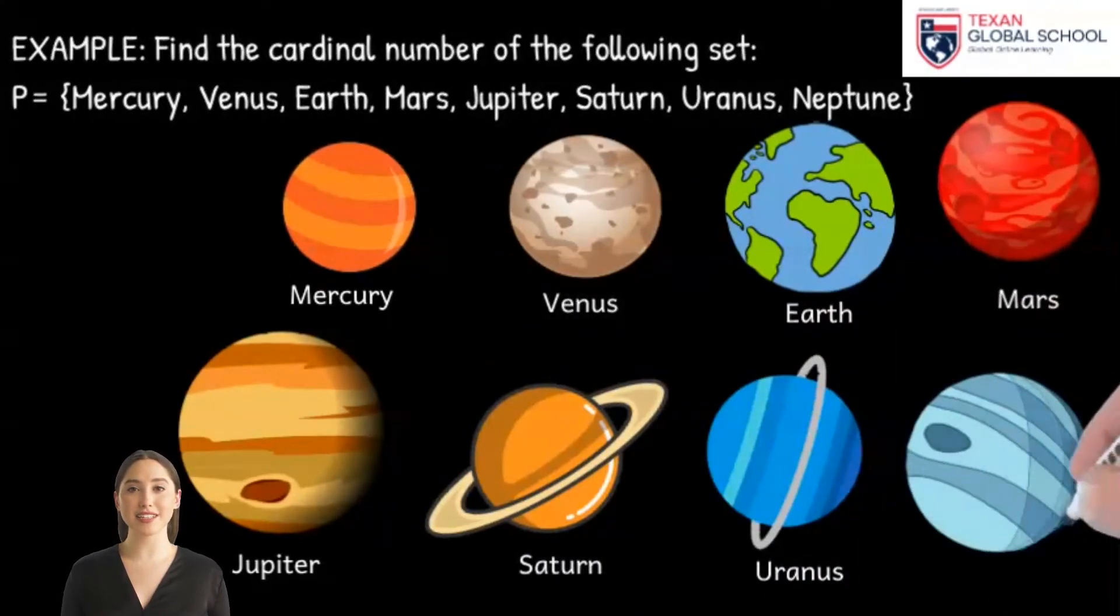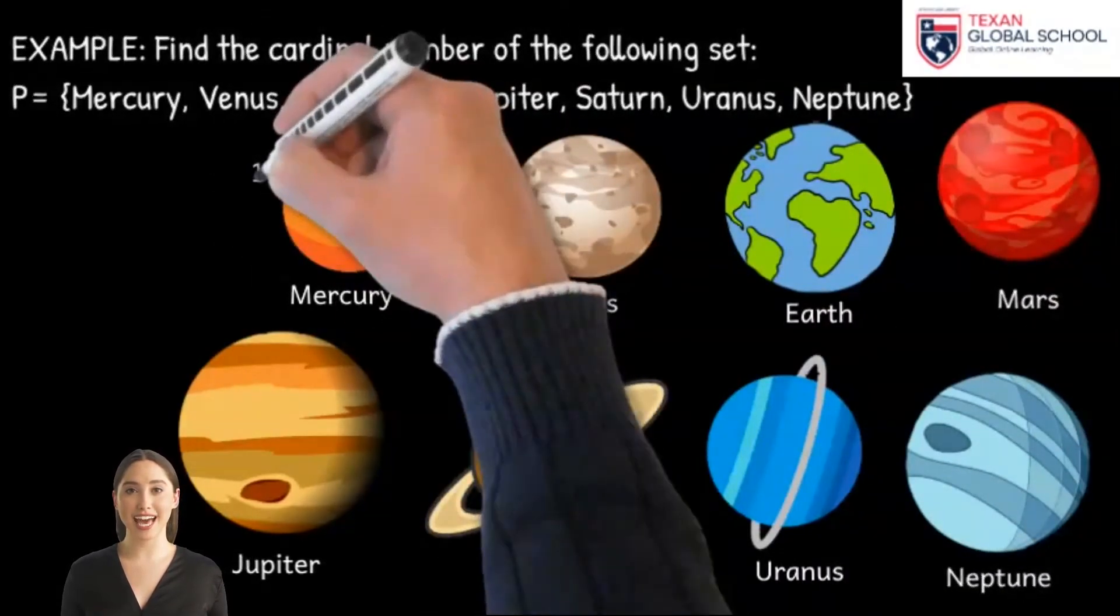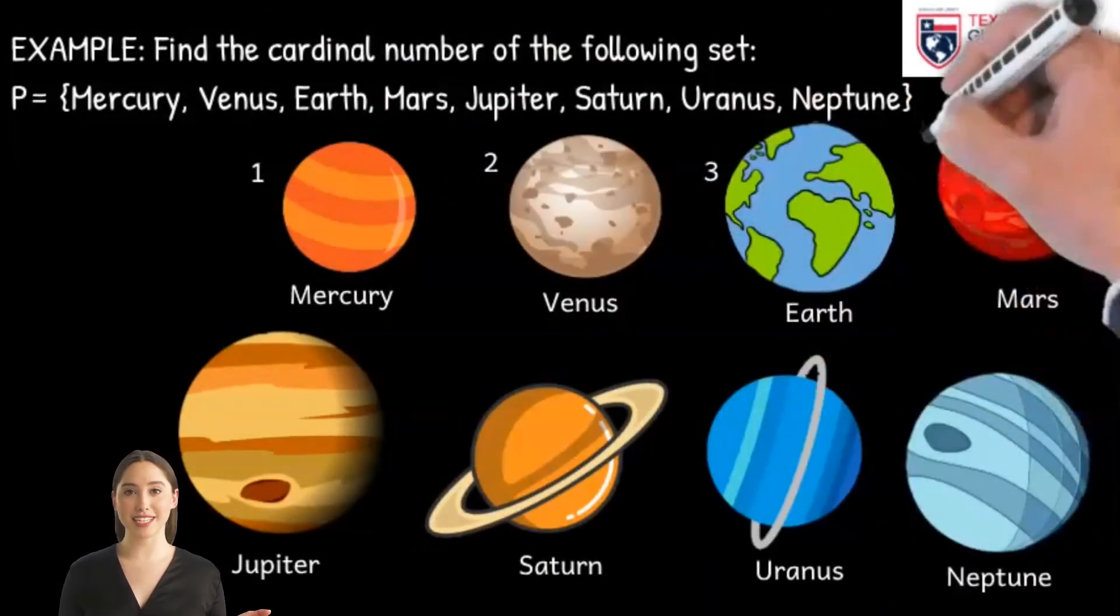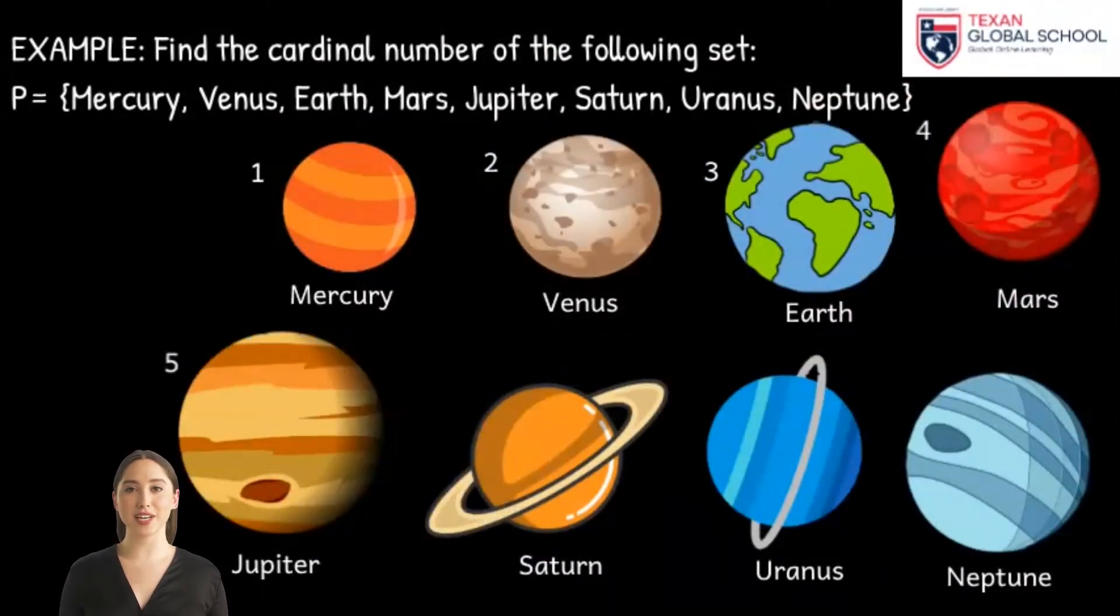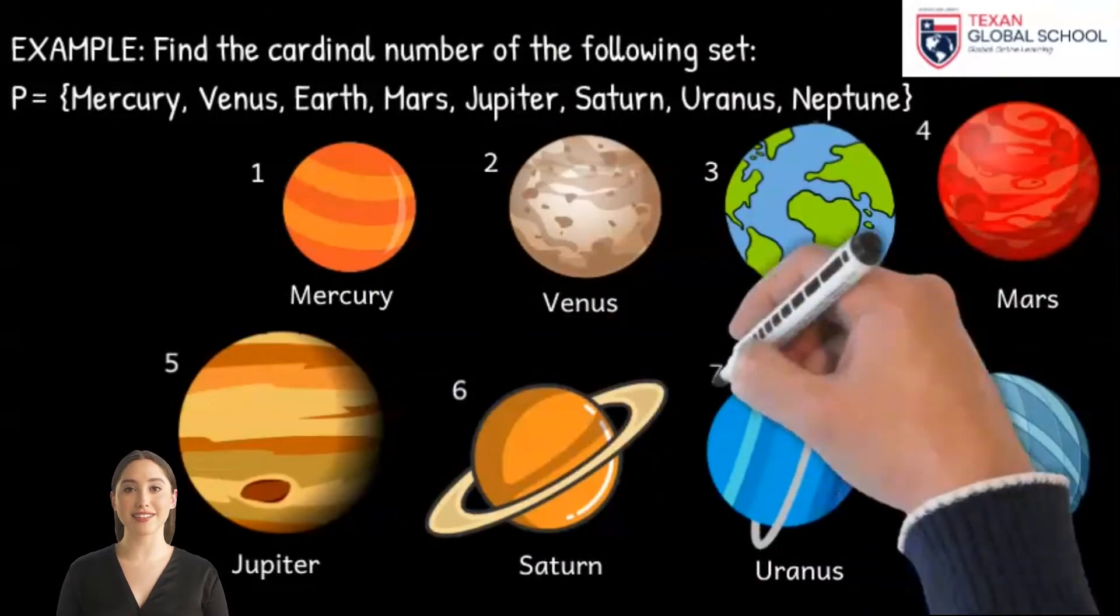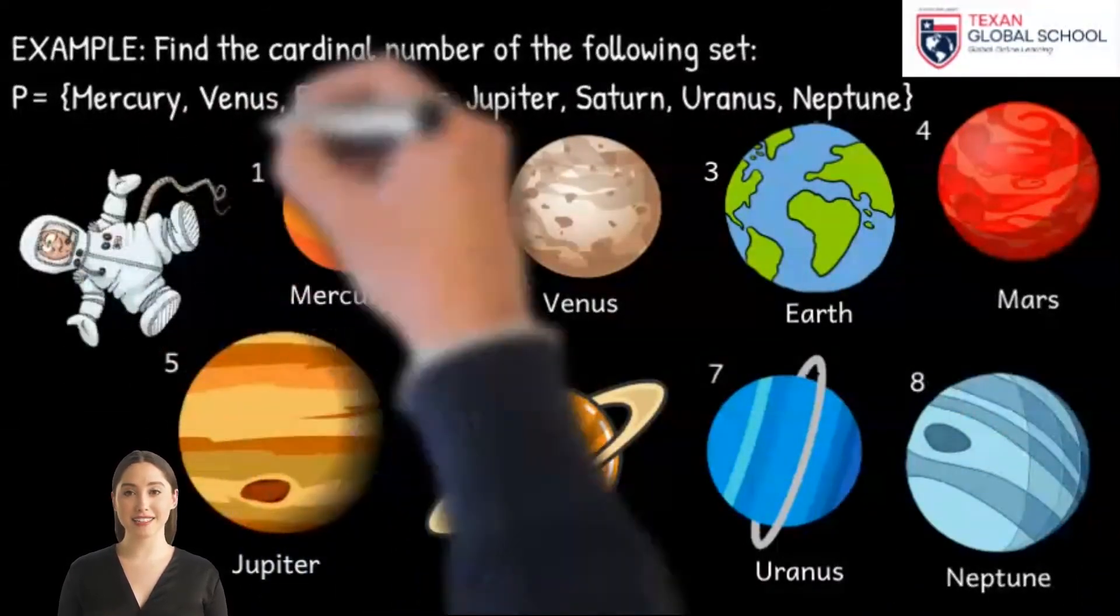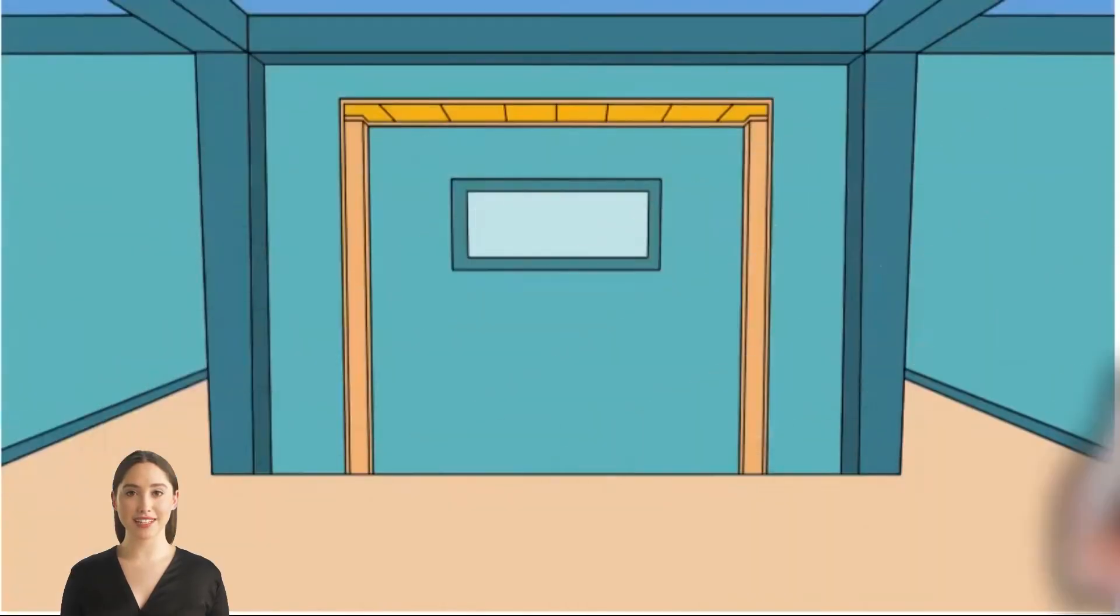As we can see, the set P represents an X number of planets. So we proceed to count them. In this way, we conclude that the cardinality of the set P is equal to 8, since it's the number of elements that make up that set.